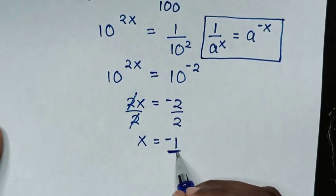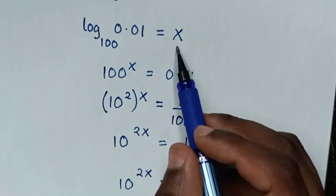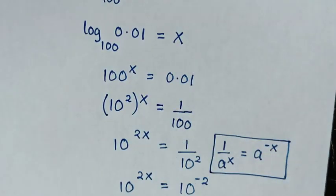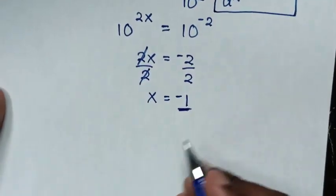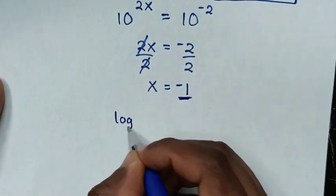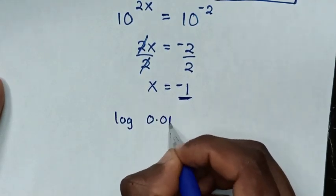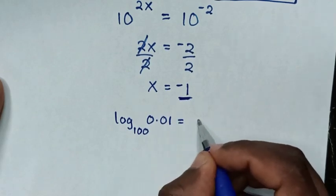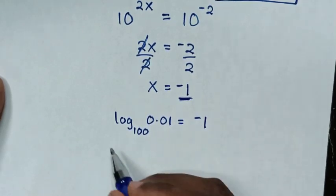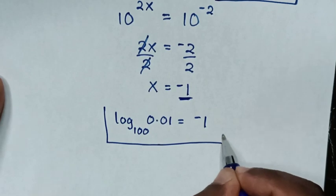Now I was already getting the value of x but before we let this logarithm as x. So from our problem which is log of 0.01 base of 100 is equal to negative 1. Therefore this is our final answer.